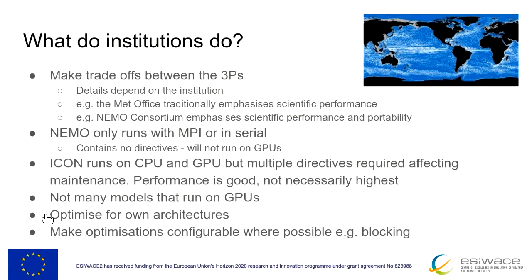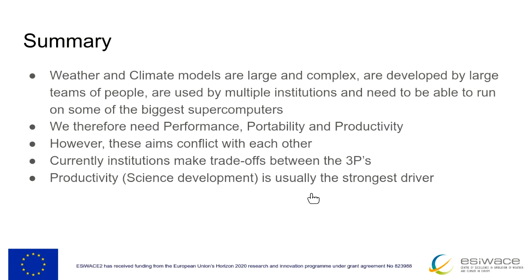One thing you can do is make optimizations configurable — structure the code so it works well on different types of architecture. Blocking is a good example: you can chunk your problem small enough to run well inside CPU caches, but also make your block size quite large for GPU. In summary, weather and climate models are very large and complex, developed by large teams, used by multiple institutions, and need to run on some of the biggest supercomputers. We really do need all three — performance, portability, and productivity — but these aims conflict, and people have to make trade-offs.